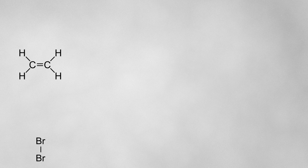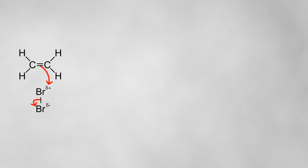As the bromine molecule approaches the double bond and the temporary dipole is formed, the electrons from the pi bond in the carbon-carbon double bond will be attracted towards the delta plus bromine atom. This creates a new bond between a carbon atom and the bromine atom. As this bond forms, the electrons in the bromine-bromine bond are repelled all the way onto the delta minus bromine atom, which breaks the bromine-bromine bond and leaves a negatively charged bromide ion.